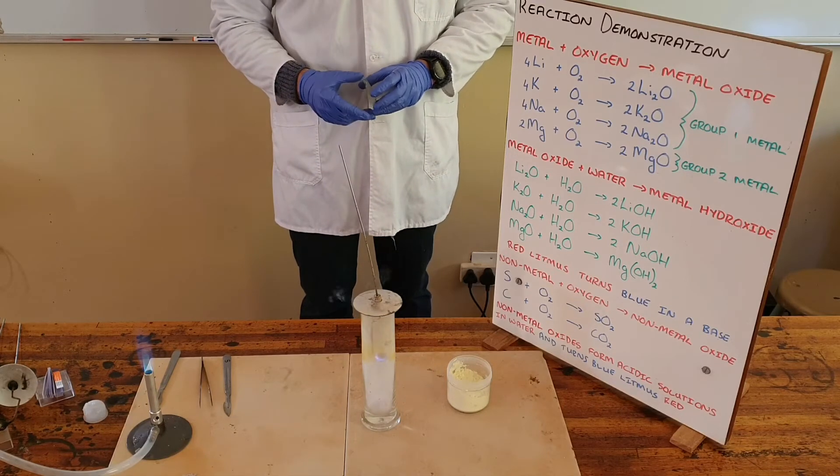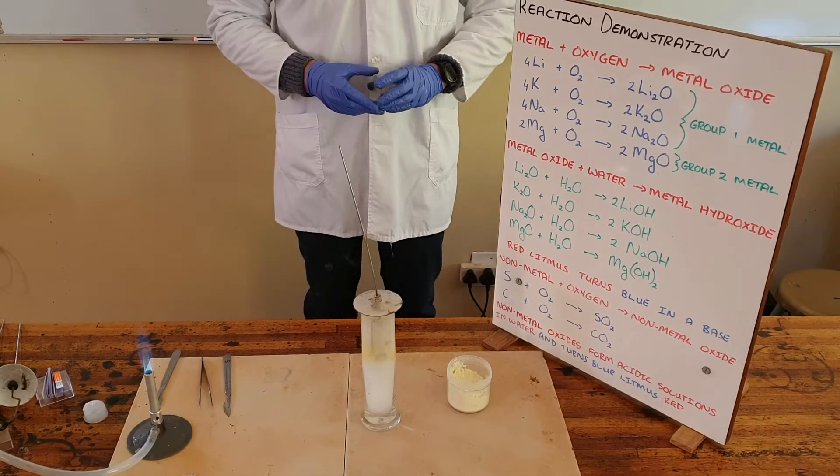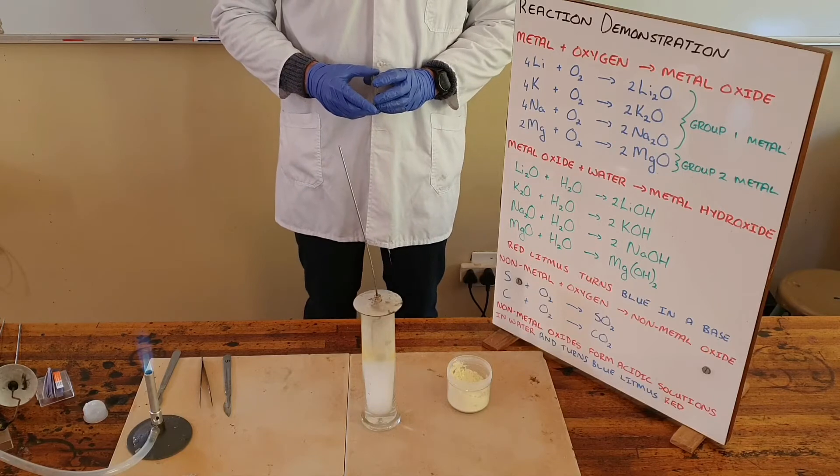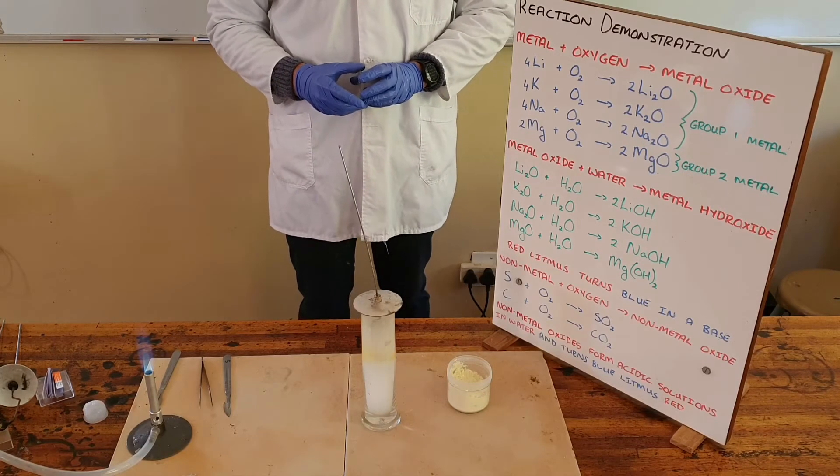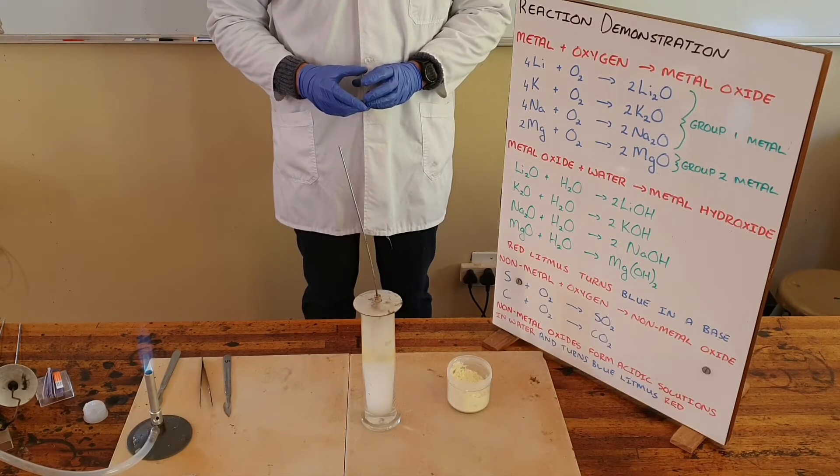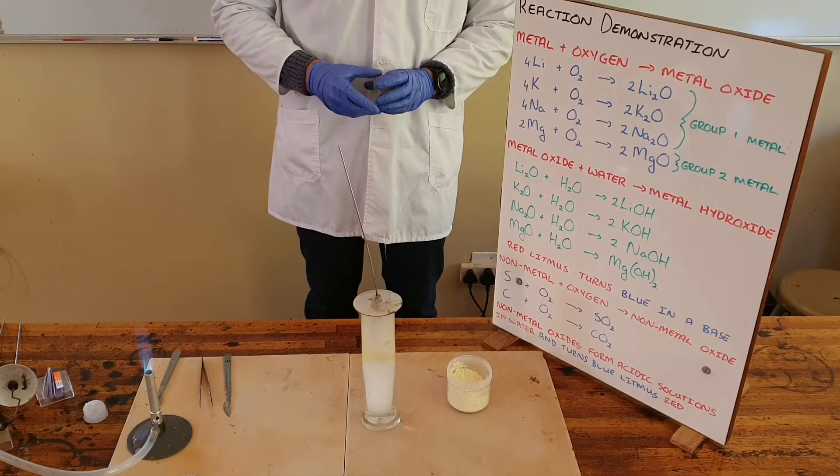We can see that the sulfur burns a lilac or purple color in oxygen. We know that when a non-metal combines with oxygen it forms a non-metal oxide, which we can see here in the form of the white smoke.